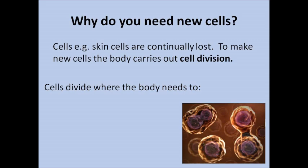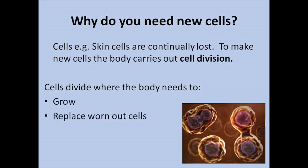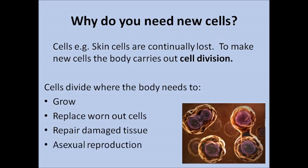First we need to think about why we need new cells in the first place. Our cells are continuously lost so we need to make new cells by cell division. The cells divide where the body needs to grow, replace worn-out cells, repair damaged tissue, and for asexual reproduction, which is where you just make clones.